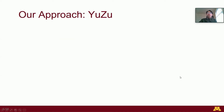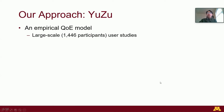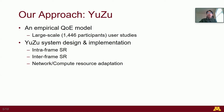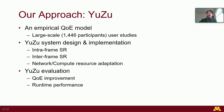To address these challenges, we took the following approach. We started by developing a first QoE model for assessing SR-enhanced volumetric video streaming. We validated our model through large-scale user studies involving 1,446 participants. Then we designed and implemented Yuzu, a first SR-enhanced QoE-aware volumetric video streaming system with three key designs: intra-frame, inter-frame, and network-compute resource adaptation. Finally, we extensively evaluated Yuzu's QoE improvement and runtime performance.